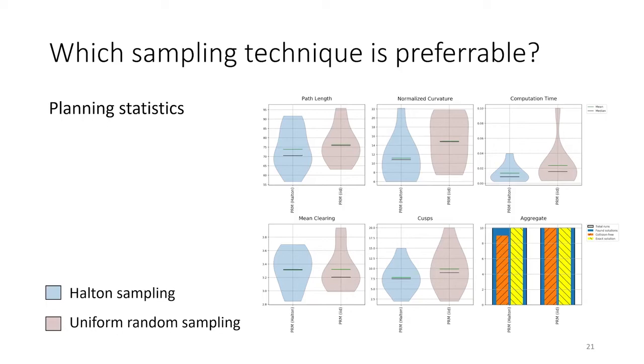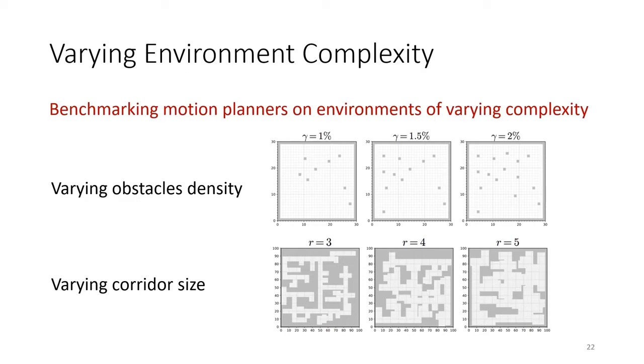In another experiment, we benchmark the motion planners on environments of varying complexity. We investigate how different planners perform by varying the obstacle density or the width of the corridors in indoor-like environments.